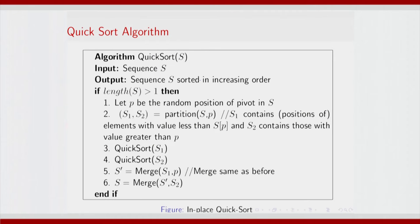Here is the quicksort algorithm. We have discussed an in-place implementation of quicksort. Given input sequence s, pick a random pivot position p, partition s into s1 and s2. We would like to do this in place — what does this mean? How do you partition s based on p into s1 and s2?